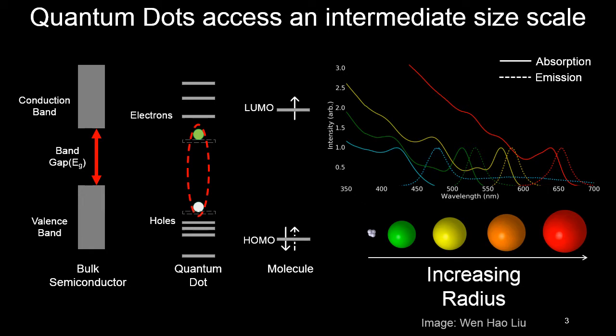We can actually tune where the optical features lie in the spectrum of these dots just by changing their physical size, which is something synthetic chemists have figured out how to do pretty robustly and reproducibly.